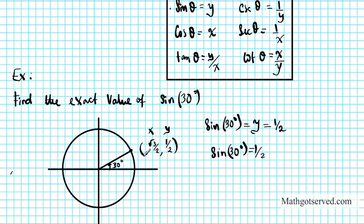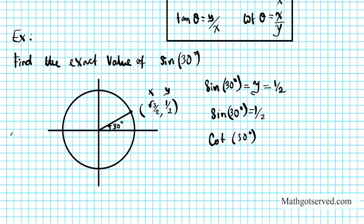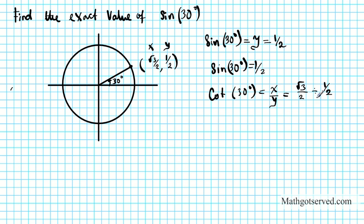For additional practice: find cotangent 30 degrees. Cotangent equals x over y. My x is √3/2 and my y is 1/2. So I compute (√3/2) divided by (1/2), which is the same as multiplying by the reciprocal: (√3/2) times (2/1). The 2's cancel and the result is √3. So cotangent 30 degrees equals √3 — all done without a calculator. That's the beauty of knowing your unit circle ratios.